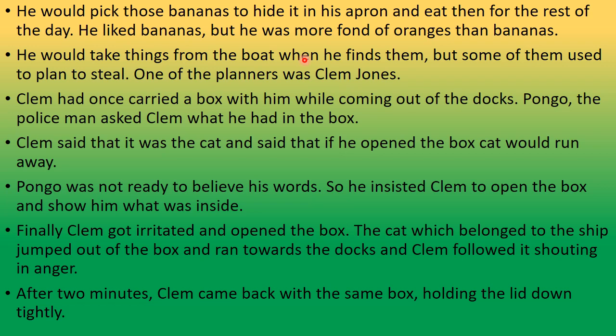But his friends had a real intention to steal things from the boat — one such friend was Clum Jones. Clum had once carried a box while coming out of the docks. A policeman called Pongo asked Clum what he had in the box. Clum said it was a cat, and that if he opened the box the cat would run away.